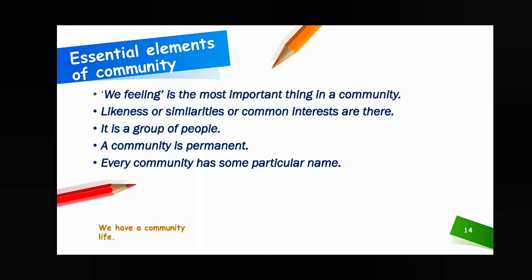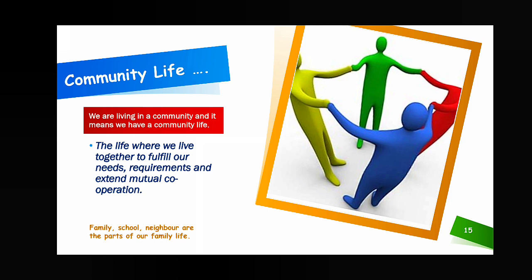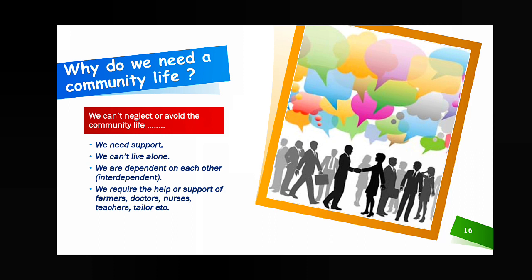We are living in a society and also in a community, which is why we have community life. Community life means the life where we live together to fulfill our needs and requirements and to help each other through interdependence. In this community life, your family, your school, and your neighbors are all included — these are the parts of our community life, and these three things — family, school, and neighbor — are what we have to study in this chapter.